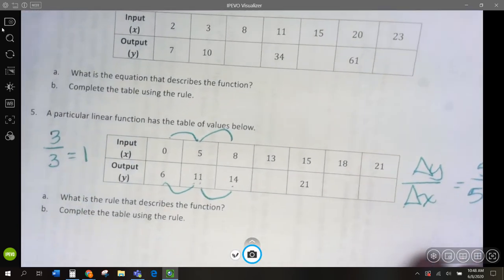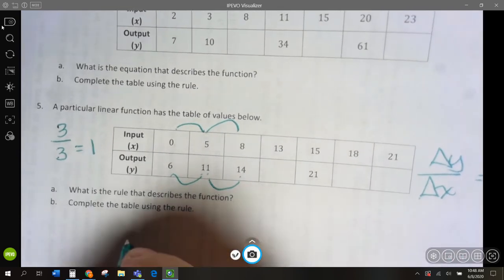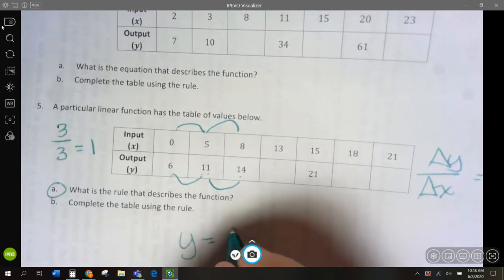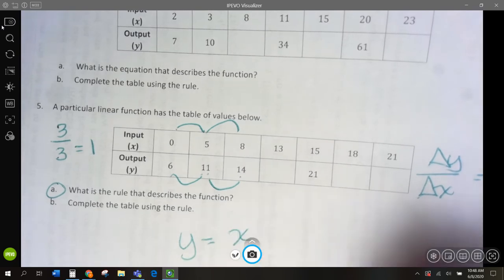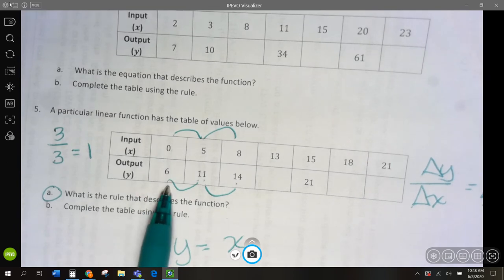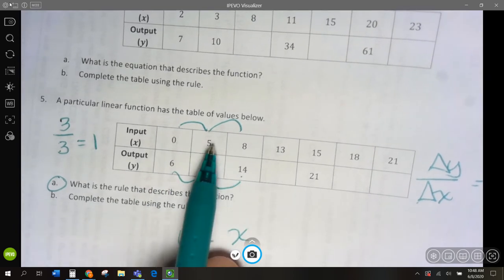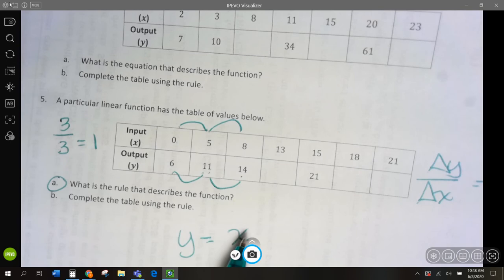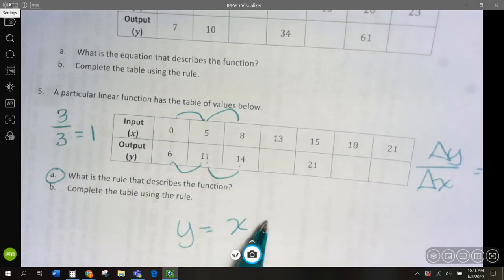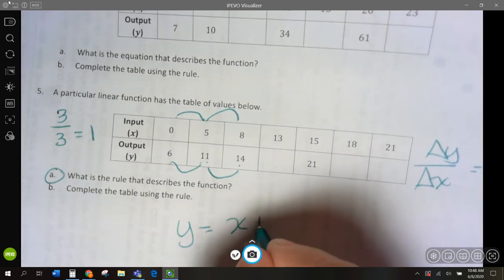So, our slope is going to be 1. So, we're going to have y for our rule. y equals 1x, or just x. But, if I go 0 times x, I have 0. How do I get to 6? If x is 5, how do I get to 11? If x is 8, how am I getting to 14? We're adding 6, aren't we?